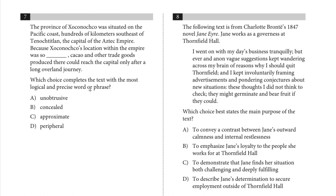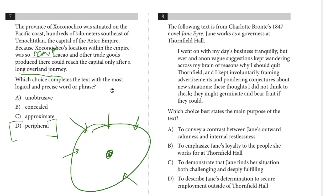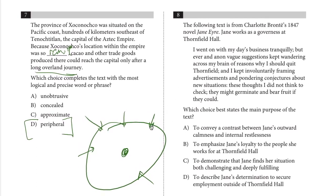Number seven: the province of X was situated on the Pacific coast, hundreds of kilometers southeast of Tenochtitlan, the capital of the Aztec Empire. Because X's location within the empire was so blank, these other goods could reach there only after a long journey. It was very remote, far out, on the edges — the answer is 'peripheral.' Periphery is like perimeter; it's on the edges, not near the center. That wraps up the seven words-in-context questions.